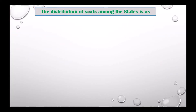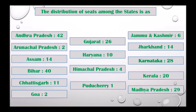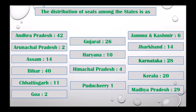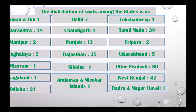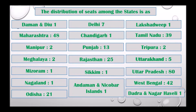The distribution of seats among the states is as follows: Andhra Pradesh 42, Arunachal Pradesh 2, Assam 14, Bihar 40, Chhattisgarh 11, Goa 2, Gujarat 26, Haryana 10, Himachal Pradesh 4, Pondicherry 1, Jammu & Kashmir 6, Jharkhand 14, Karnataka 28, Kerala 20, Madhya Pradesh 29, Daman & Diu 1, Maharashtra 48, Manipur 2, Meghalaya 2, Mizoram 1, Nagaland 1.